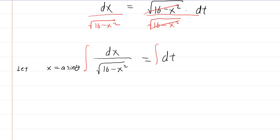If you look very carefully at this expression, you can rewrite it as the square root of 4 squared minus x squared. And therefore, the a quantity would equal 4.